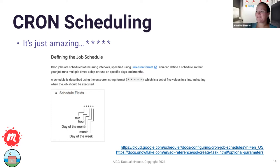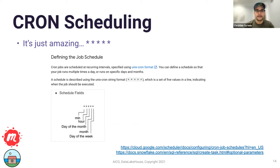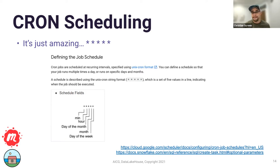Alright, we're back. So I was talking about cron scheduling. Just like you have in Unix or Linux, you can actually use cron scheduling for your Snowflake tasks — really cool. You can run on any frequency down to a minute. It doesn't go below one minute. You can run stored procedures, standard SQL, really any of the query or DML options you have inside of Snowflake.